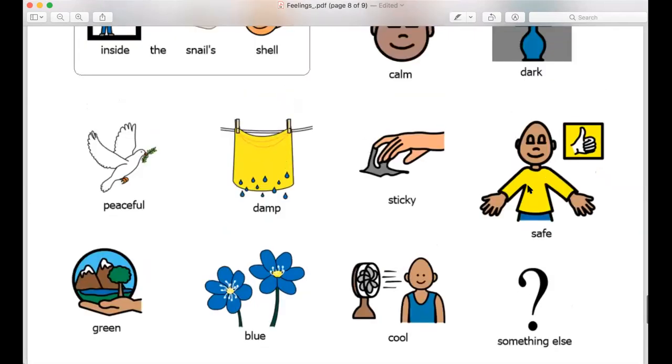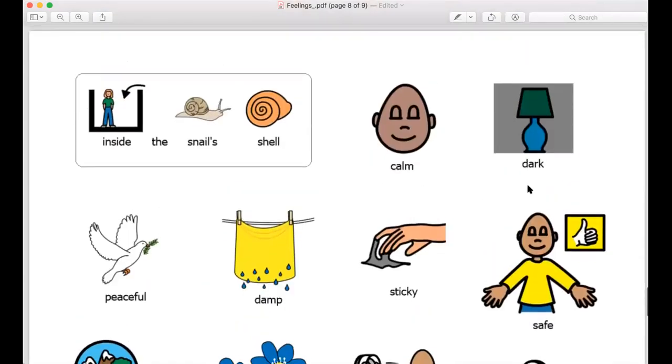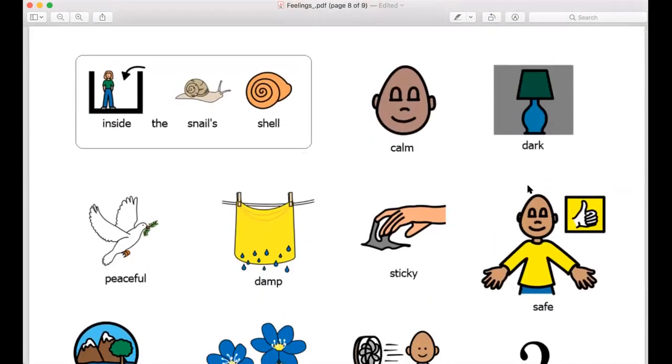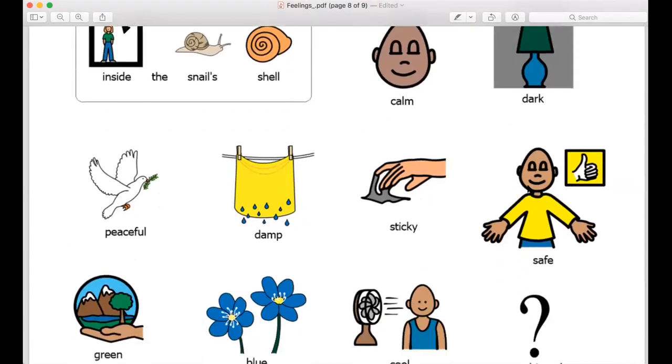Maybe inside of the snail's shell the little child was thinking about how they felt safe. Those are all different ways. And I wonder how you would draw any of those ways, right? There's so many ways to draw it. It might look like one of these pictures or it might look like a color. Maybe there's a color that's inside of the snail's shell. Or maybe there's many colors.